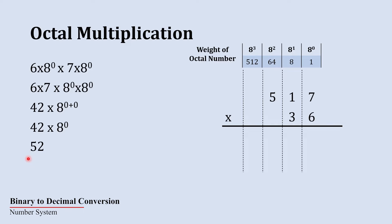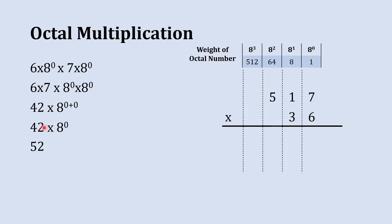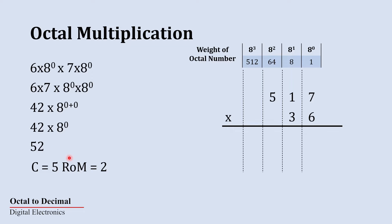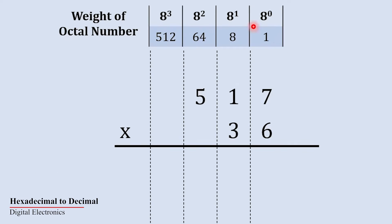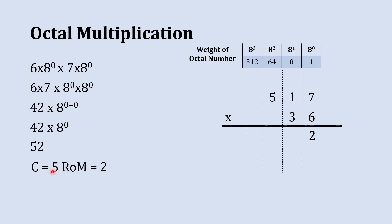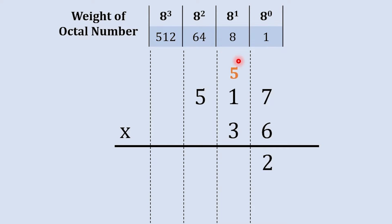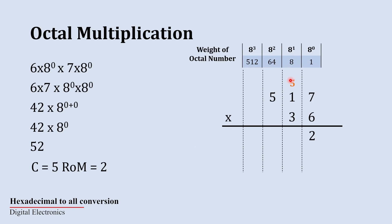So here, 52 is the octal equivalent to this decimal 42. In this case, 5 will be our carry to the next column and 2 will be the result of our multiplication. This 2 we are going to write at the 8 raise to 0's place, and this 5 is carried to the next column.